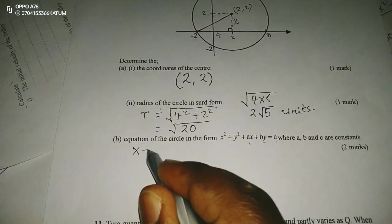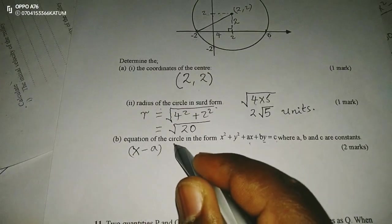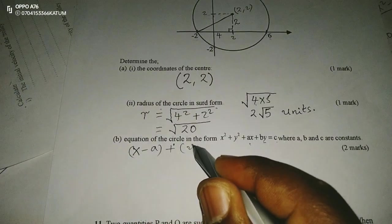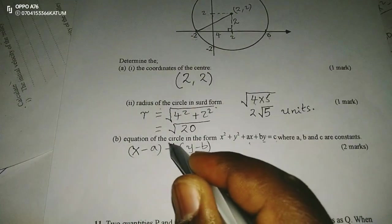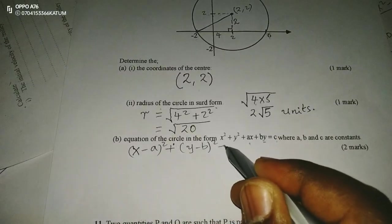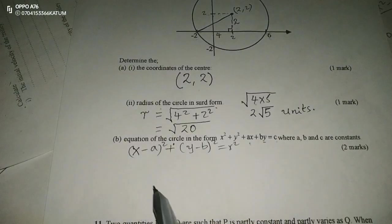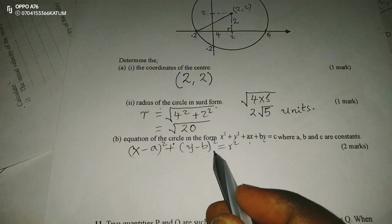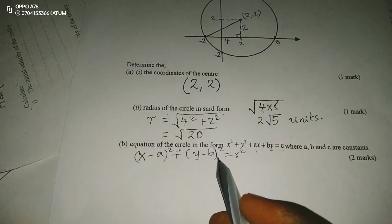We're going to have the general equation of a circle, which is given by (x - a)² + (y - b)² = r². a, b is the center of the circle, which is (2, 2).